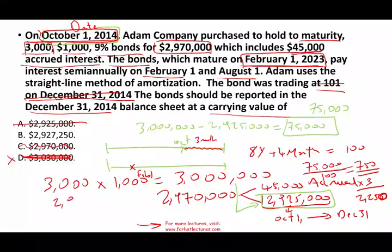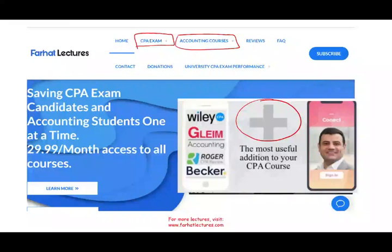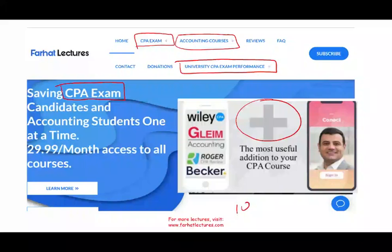You started with the bond's original value of $2,925,000, plus $2,250 of amortized discount, giving you $2,927,250 — that is answer B, the book value of the bond. Once again, if you like this recording, please like it and share it. Check out my website; I don't replace your CPA prep courses, I complement them. The CPA is a long-term investment — don't shortchange yourself. I might be able to add 10 to 15 points to your score. Good luck and study hard.